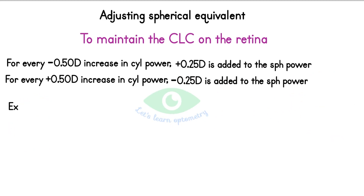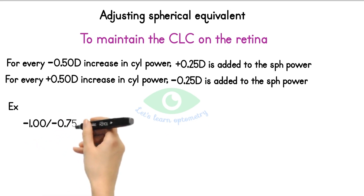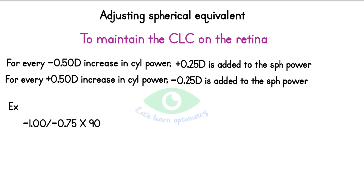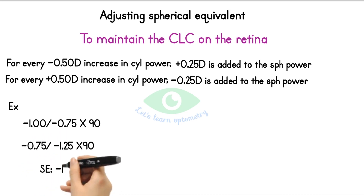Example: The correcting cylindrical lens before JCC is minus 1.00 / minus 0.75 at 90 degrees. During power refinement, the cylindrical power found was minus 1.25 at 90 degrees — an increase of minus 0.5 diopter. So we add plus 0.25 to the spherical power: minus 1.00 plus 0.25 gives minus 0.75 diopter. The spherical equivalent in both cases is the same, confirming the circle of least confusion remains on the retina.